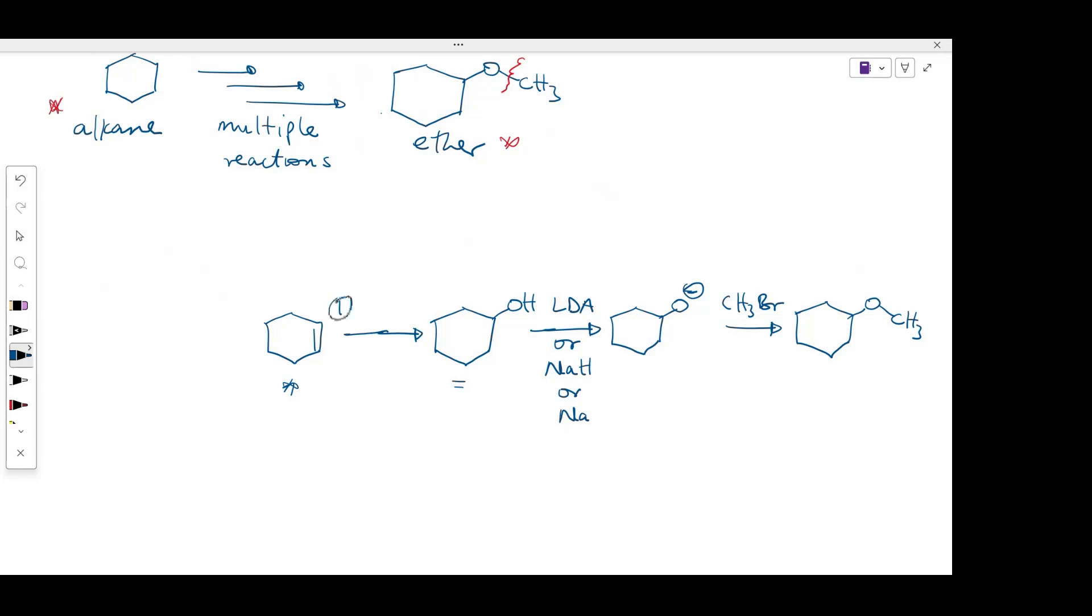Or we could also use borane, sodium hydroxide, and hydrogen peroxide. So this will add hydrogen and OH across the double bond of the alkene.